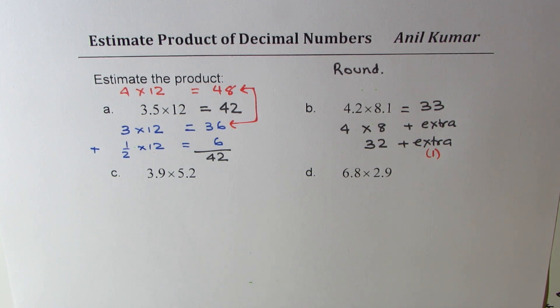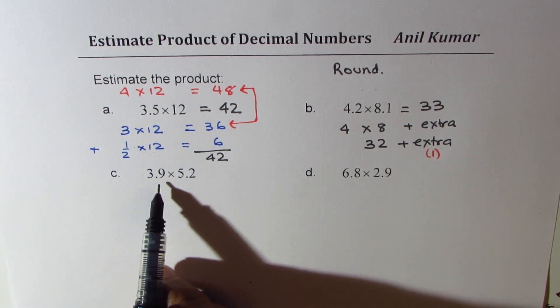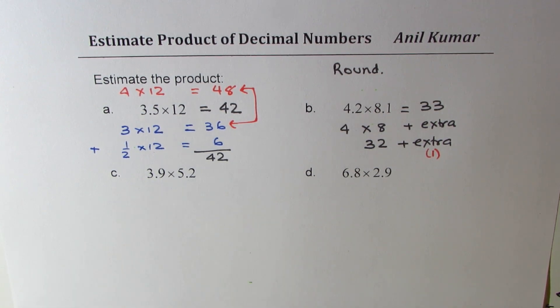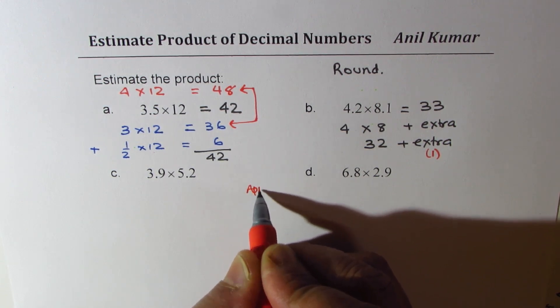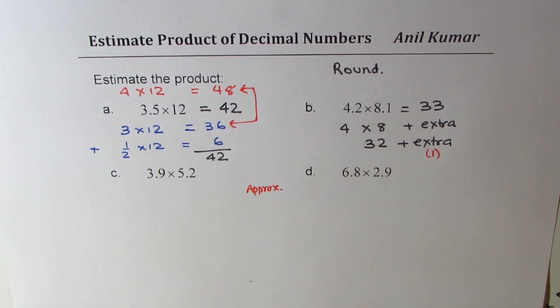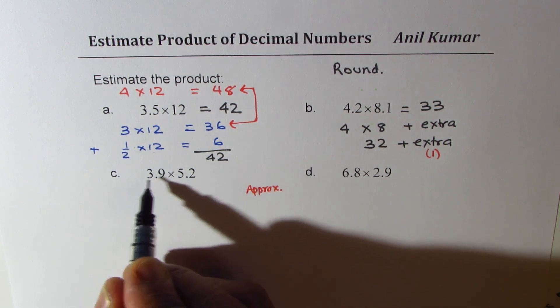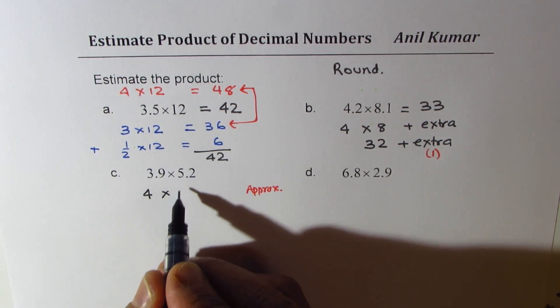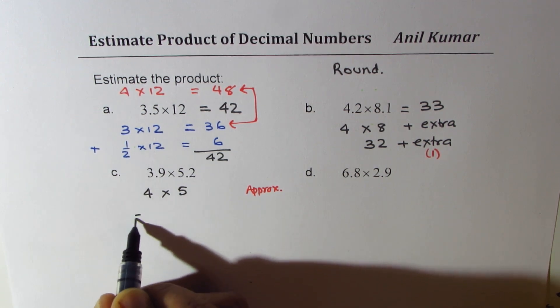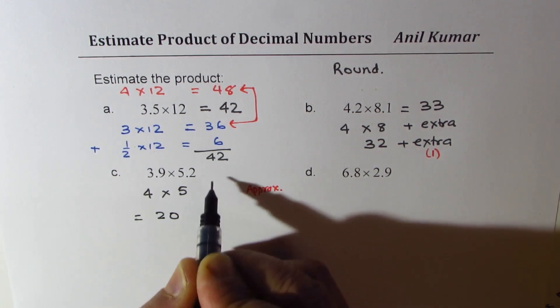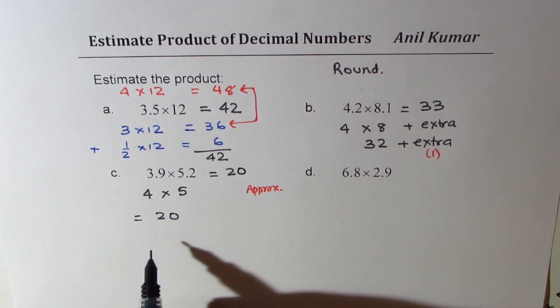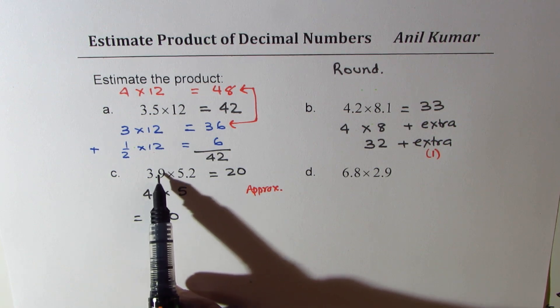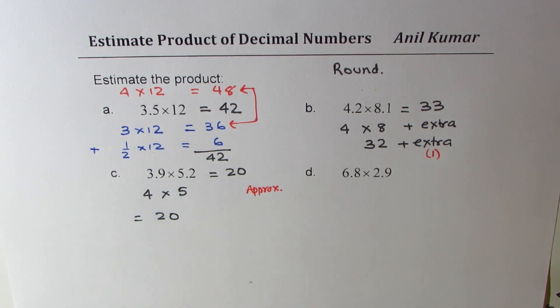Now let's have one more example. This time we have 3.9 and 5.2. The first step here is to approximate. If you approximate, 3.9 is close to 4 and 5.2 is close to 5, and 4 times 5 is 20. So we could safely write this as 20. This seems to be very accurate since one number is increased, the other one is decreased.